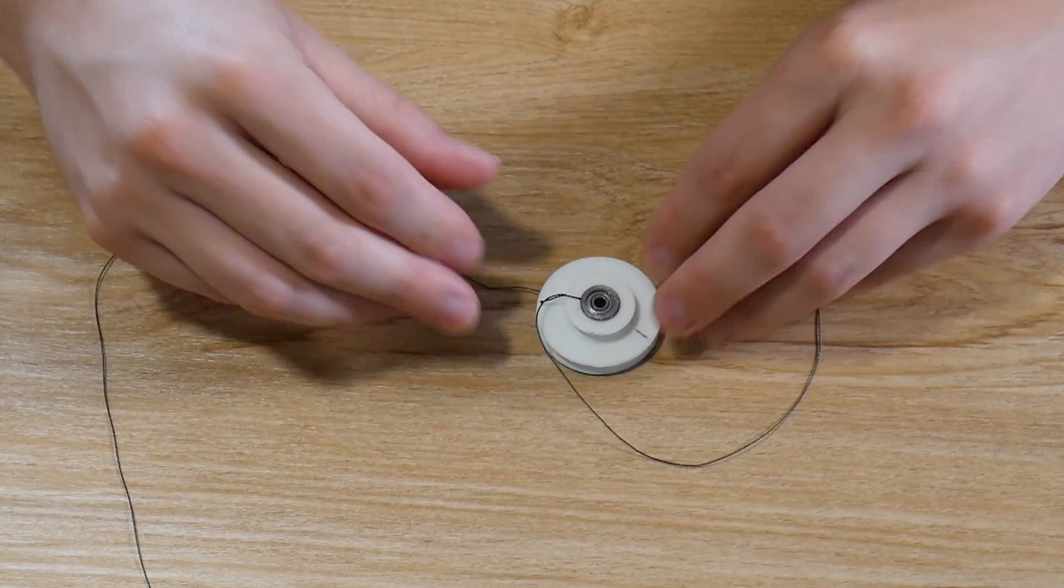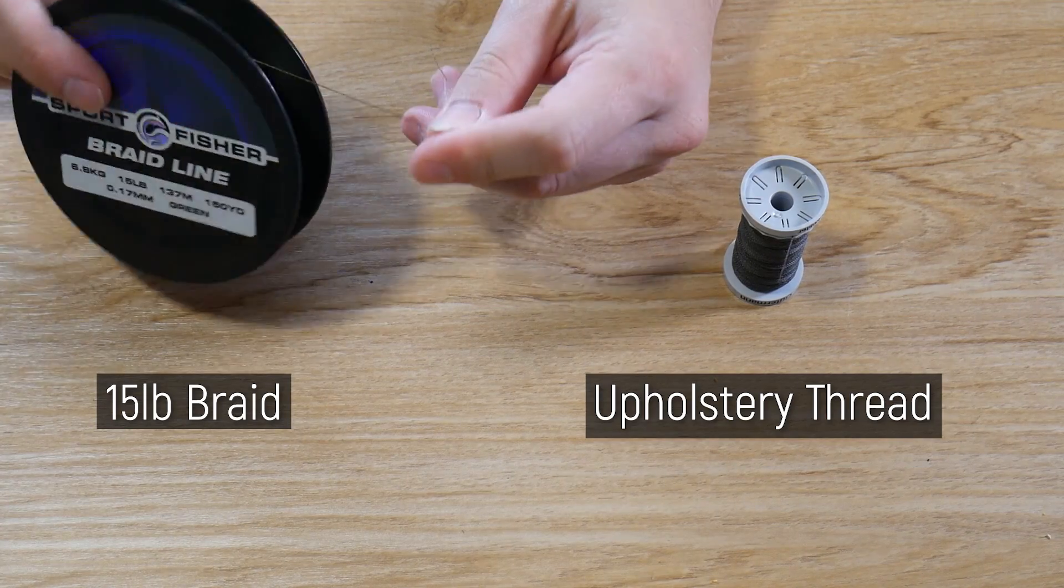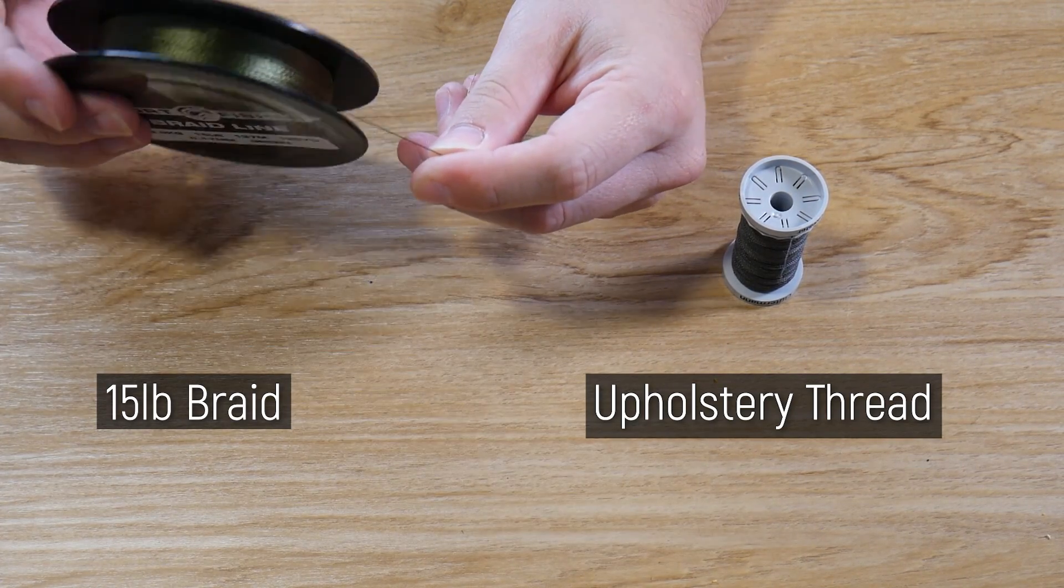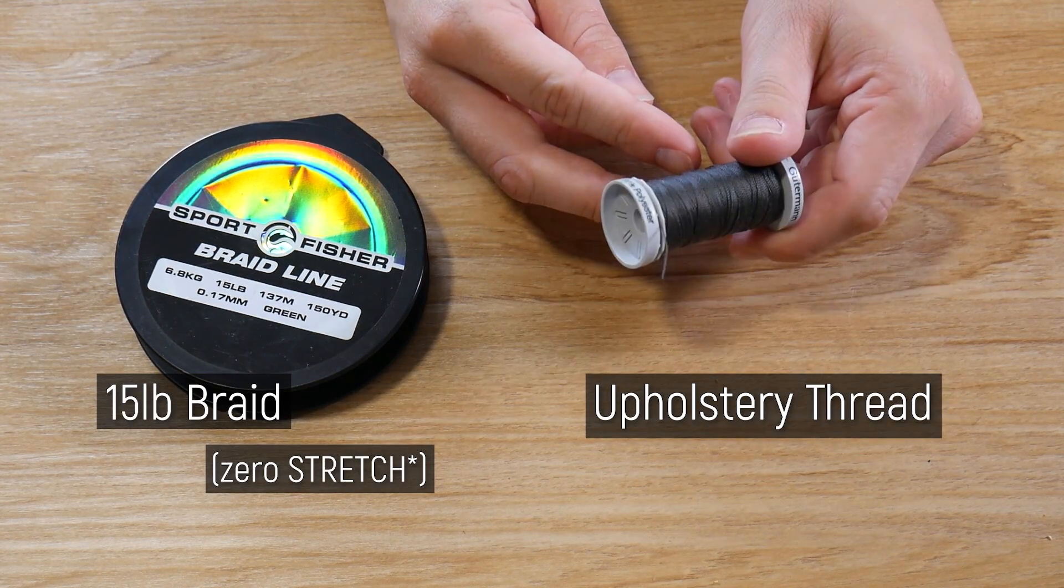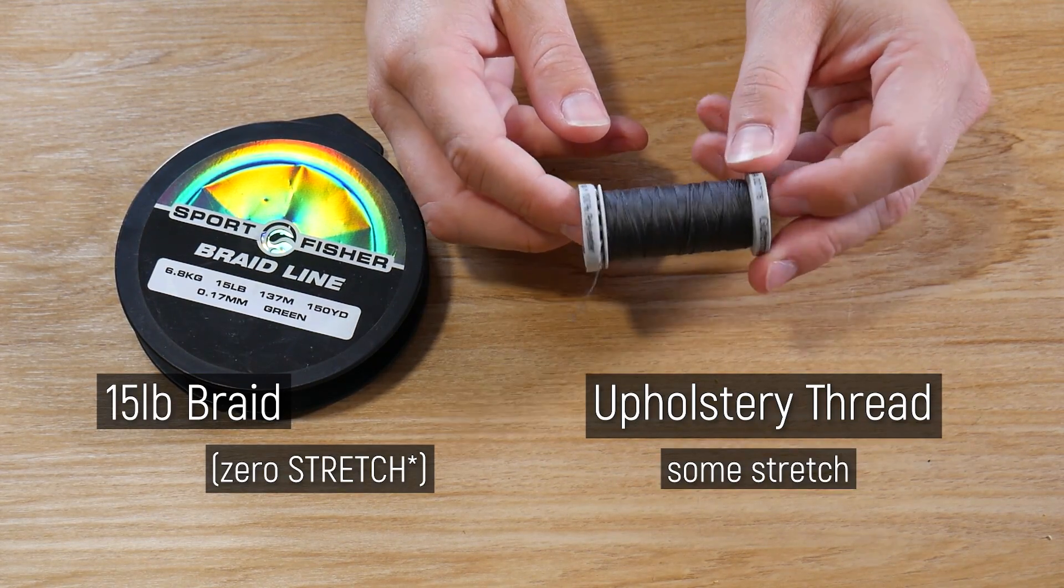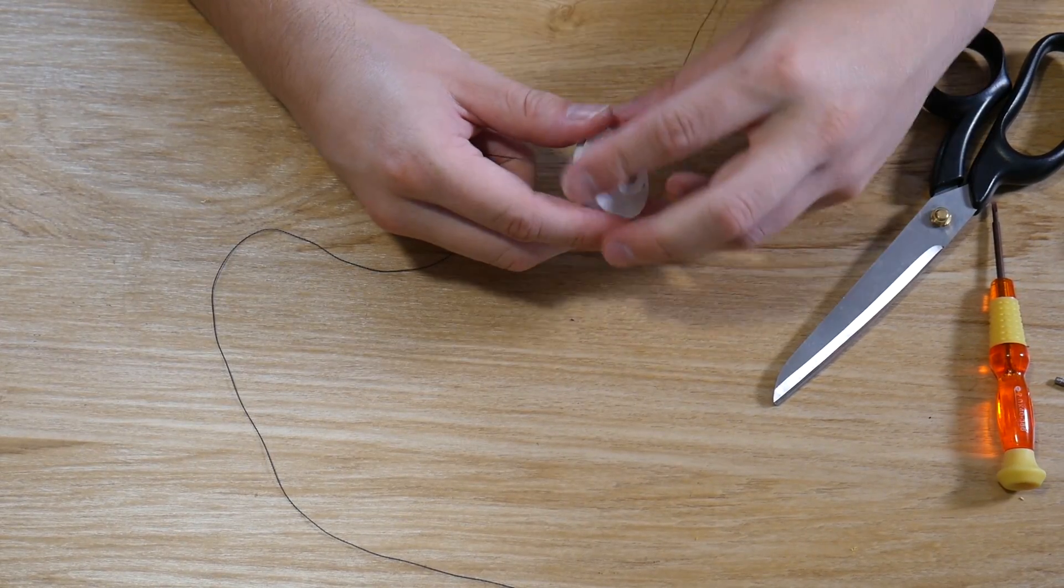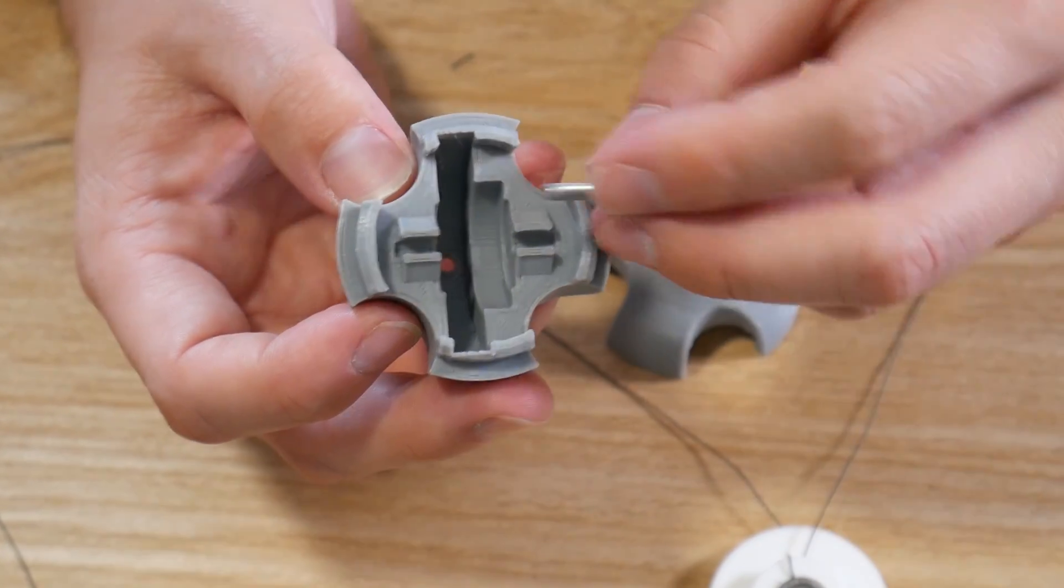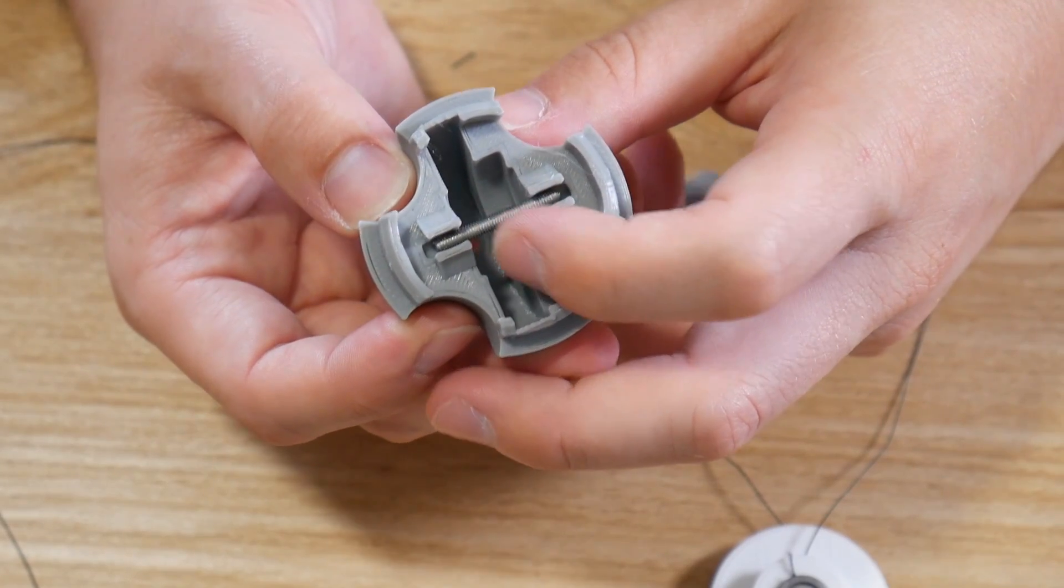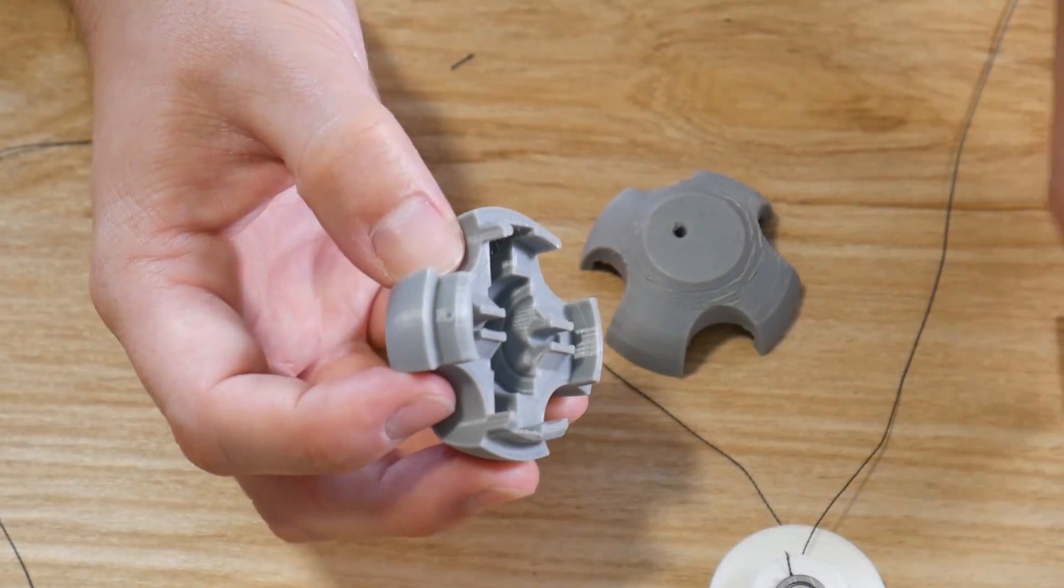Speaking of thread, 15 pound test fishing braid is great with zero flex. But I found upholstery thread has just a tiny bit of stretch to it and it's available in a much bigger range of nicer colors. Plus it seems to cut into the plastic less, so I went with that for the final design. But both work, whatever you can get your hands on. A long M3 bolt with its head cut off makes a perfectly good axle. Just thread that through your bearing and press it down to the slot. It should reach the bottom of the slot and the pulley shouldn't feel bound up.